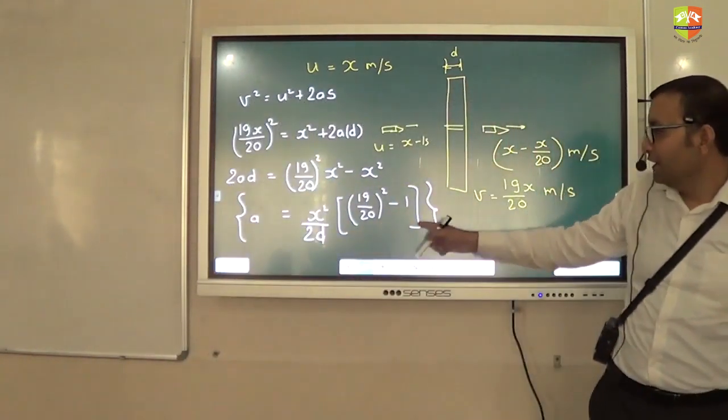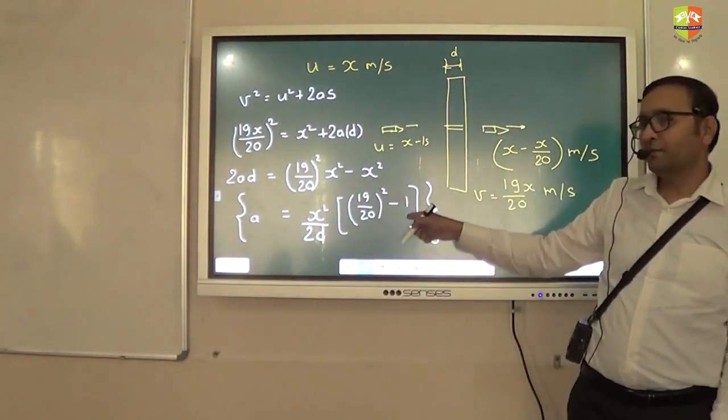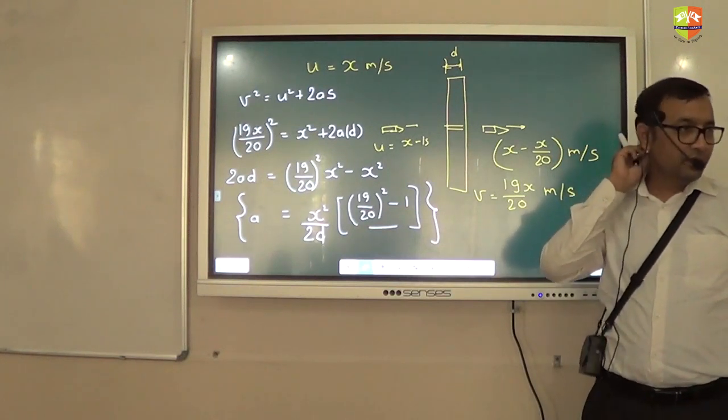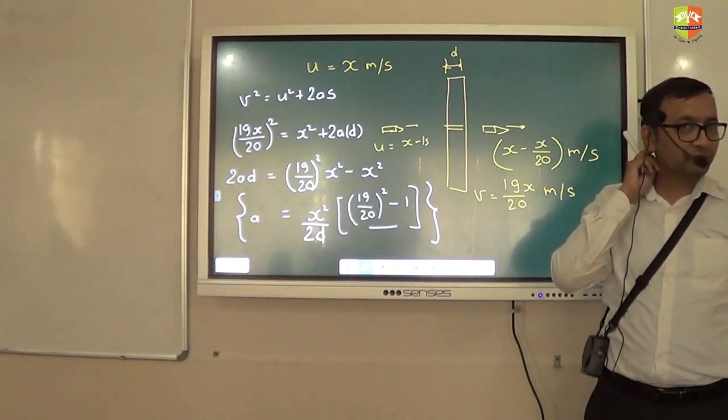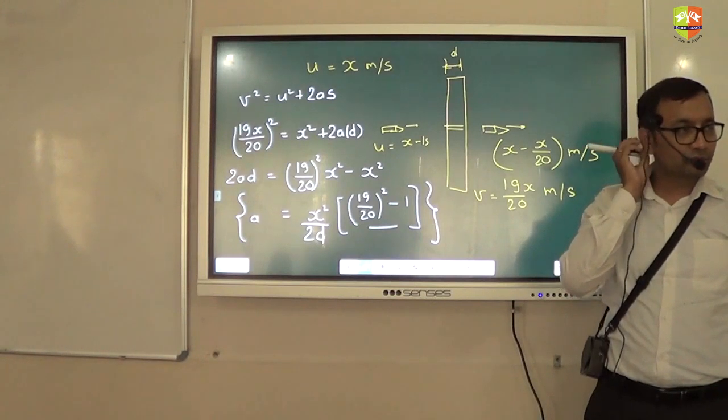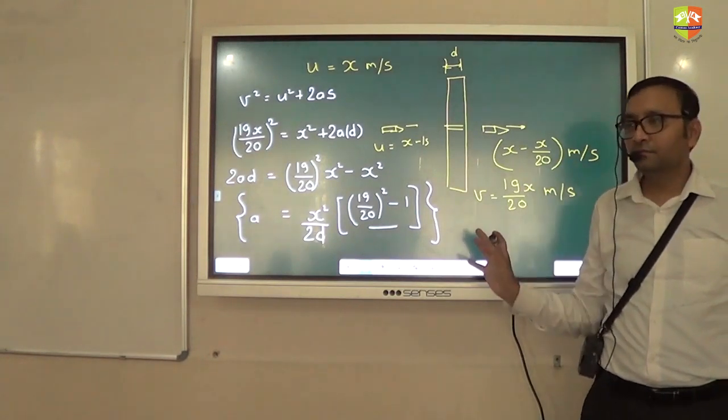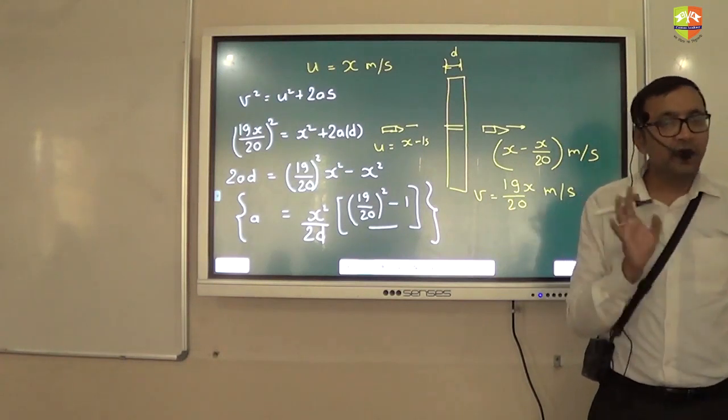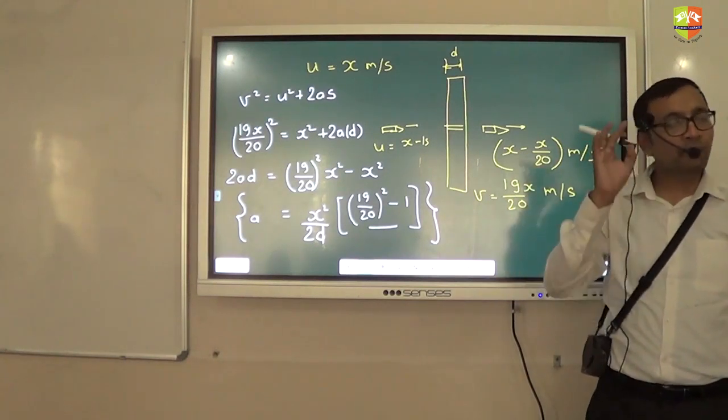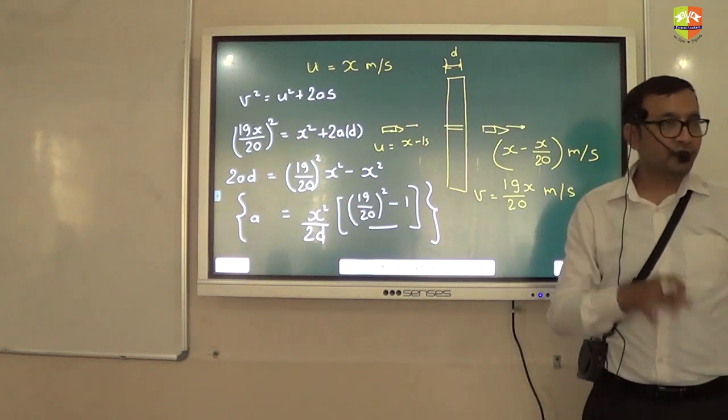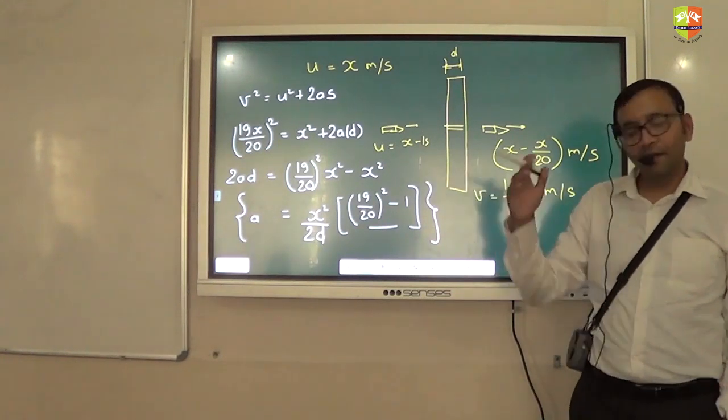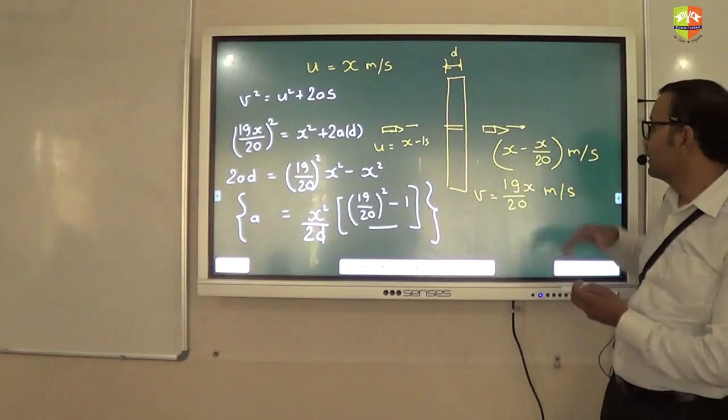This is negative by this. You see 19 by 20 whole square minus 1 is negative. This is negative. Okay? Right? Right? Yes, sir. Any doubt here? This is your acceleration. Alright? Now you have to find out how much distance the bullet should travel so that it stops. Initial velocity is x. Final velocity should be? Zero.